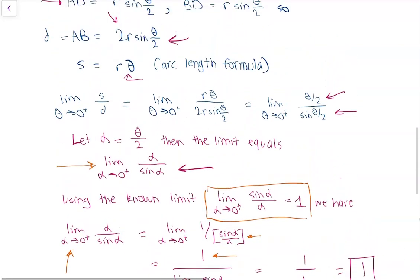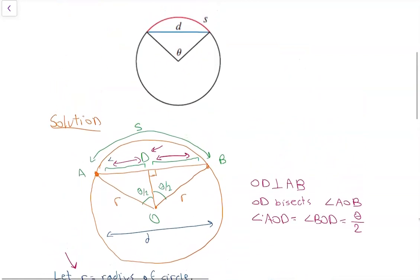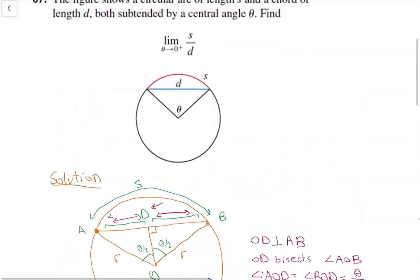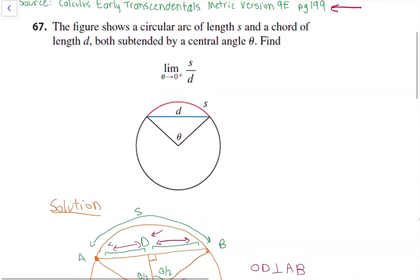This means if we go back to the top, the ratio of the lengths of s and d will approach 1 as the angle theta goes towards 0.